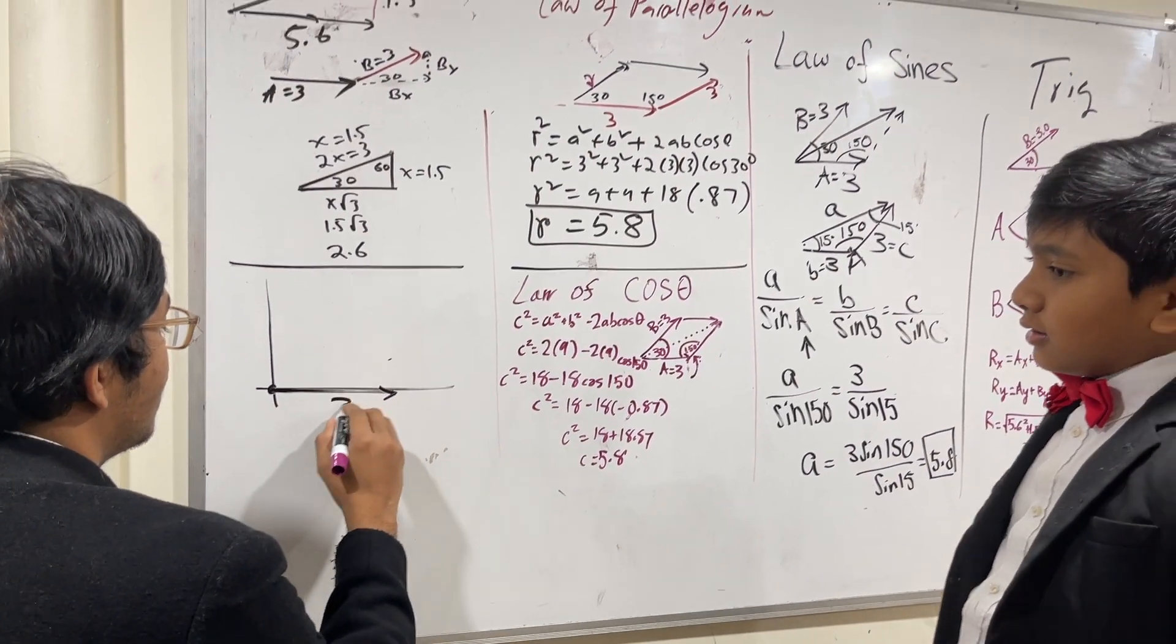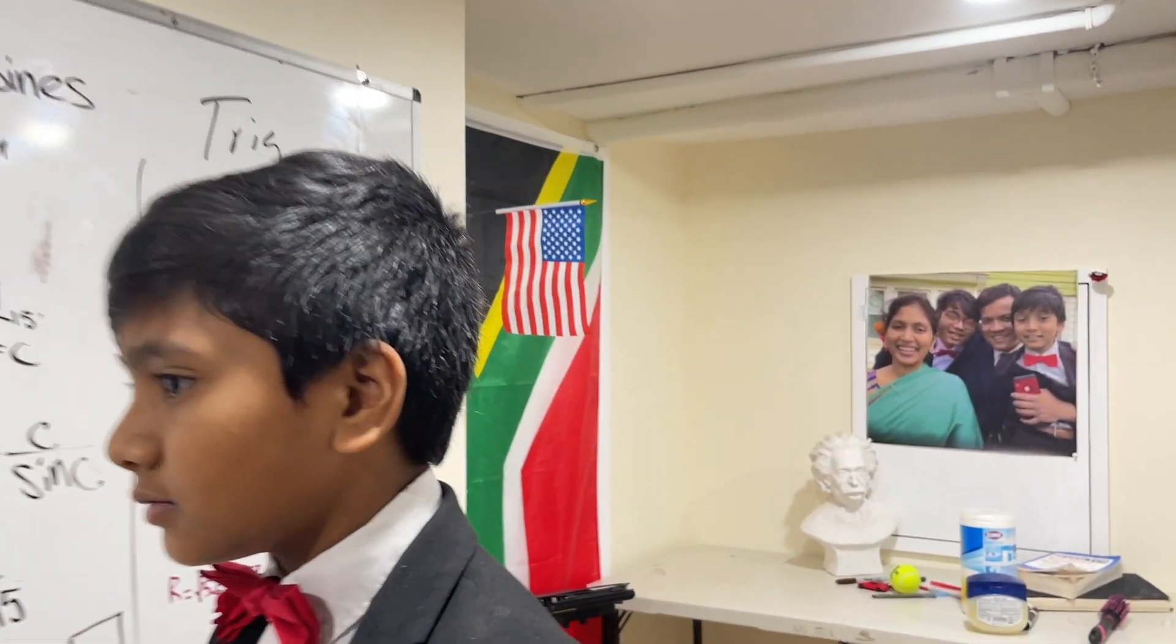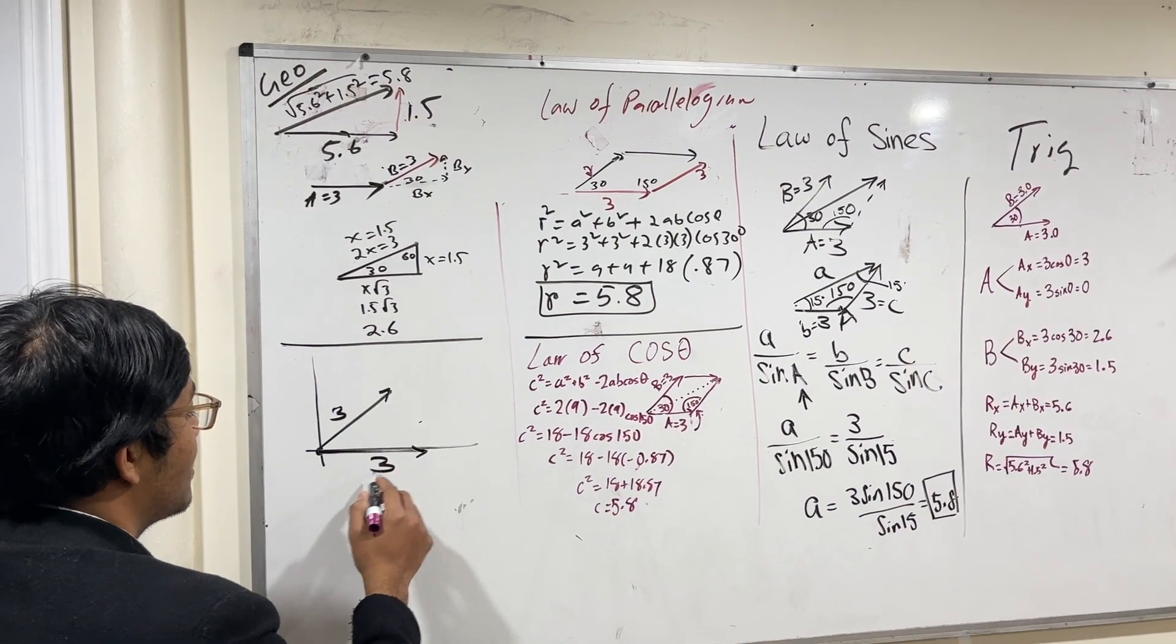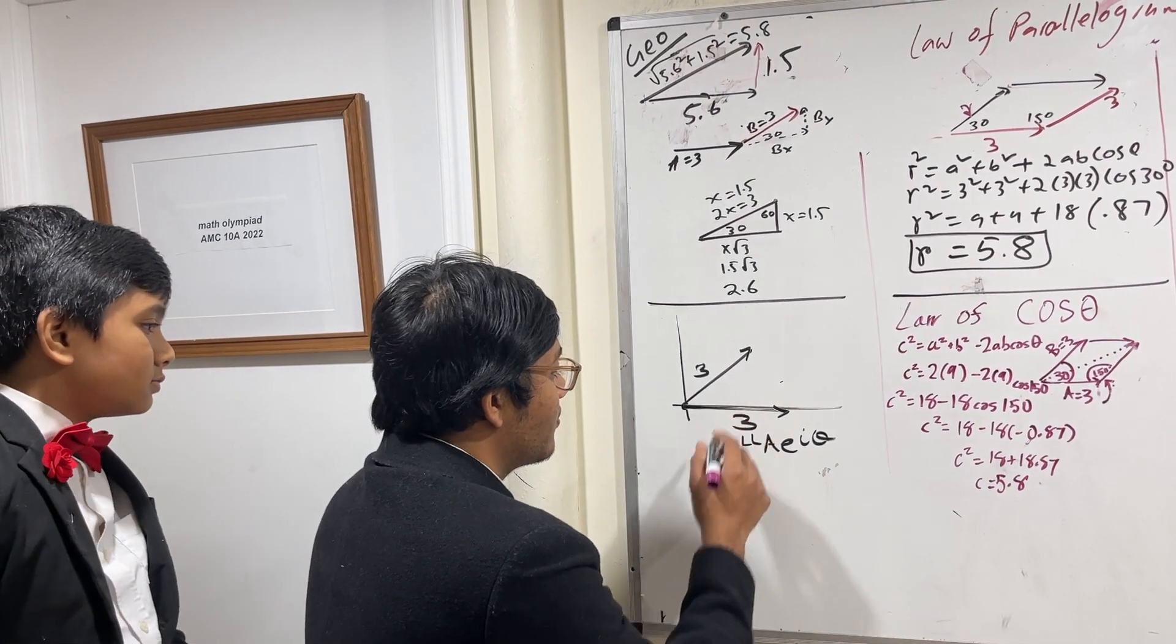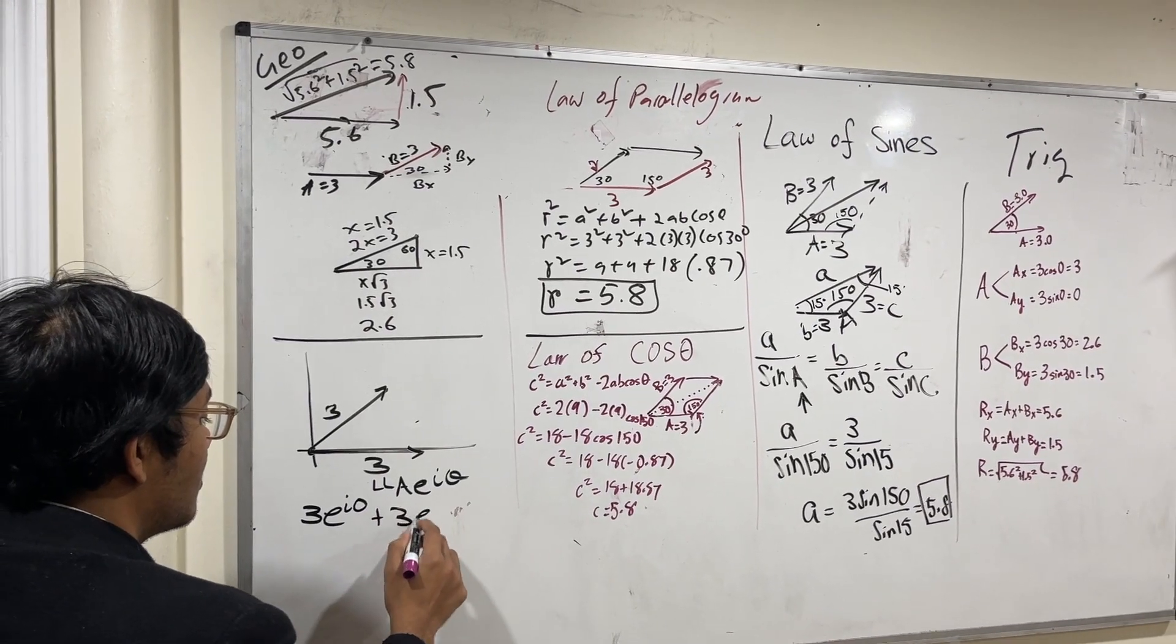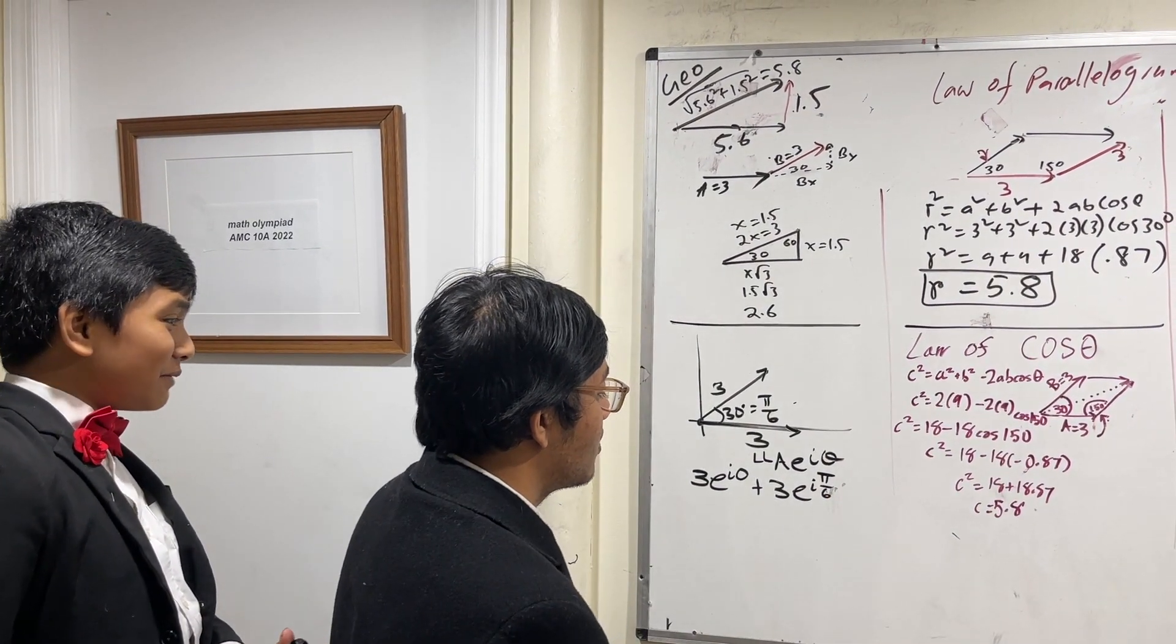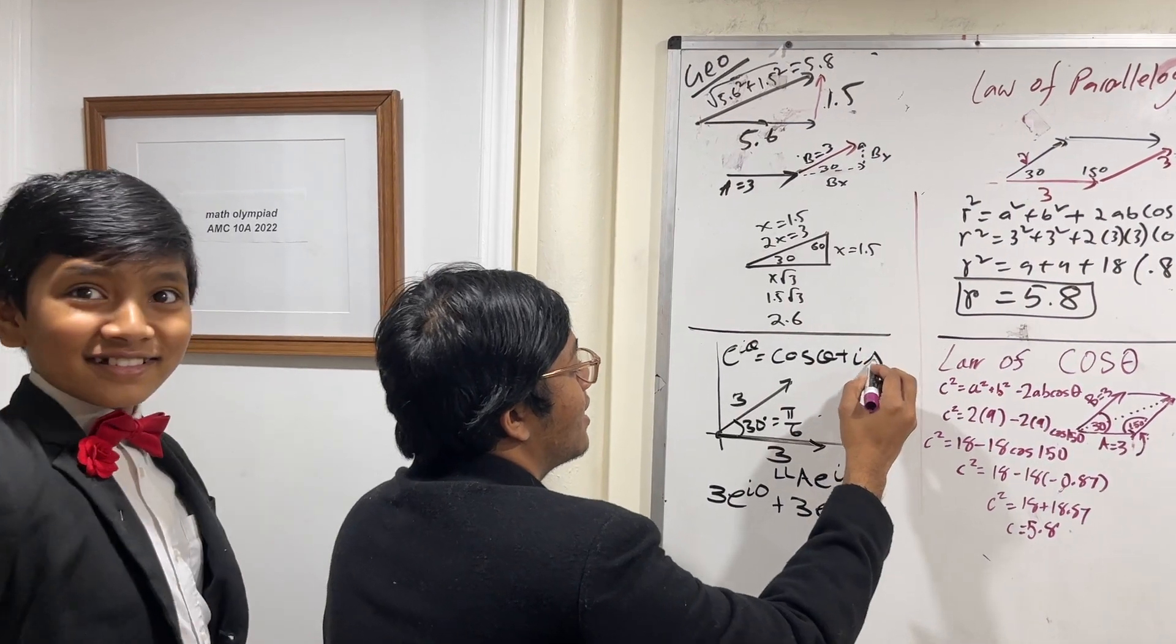We have our two vectors, 3 and 3. So we're going to try to add these using... I can show all the methods. This is an opportunity to show them all the methods. So now we're going to add up our two vectors using exponential notation. We can express each of these vectors as A e to the i theta, where A is the size of the vector and theta is how much it's rotated. So for the first vector, the amplitude is just 3, and theta is just 0. And for the second vector, our amplitude is also 3, but theta is 30 degrees. And in radians, that works out to be pi over 6. Are you doing an imaginary number?